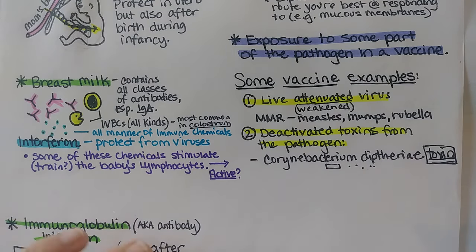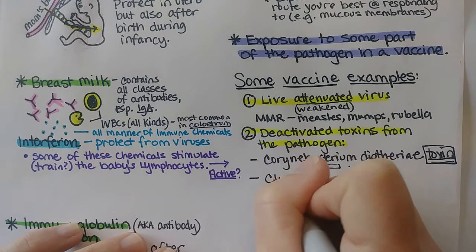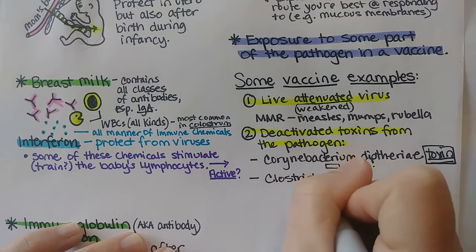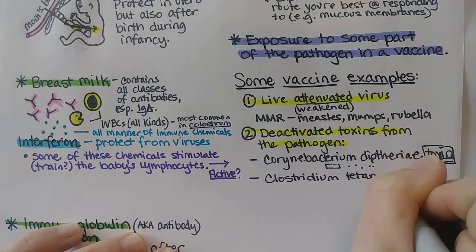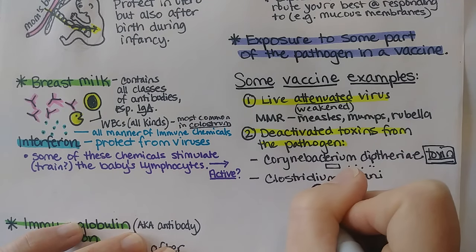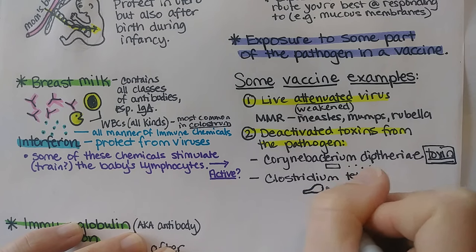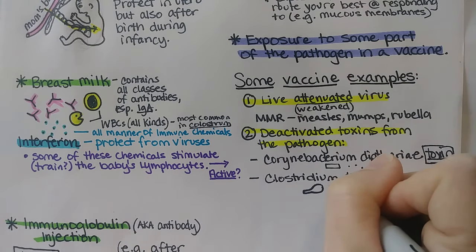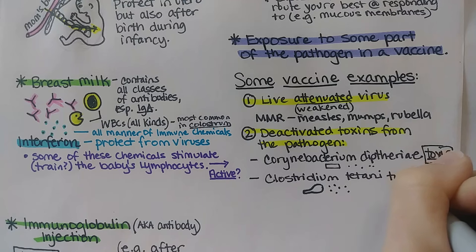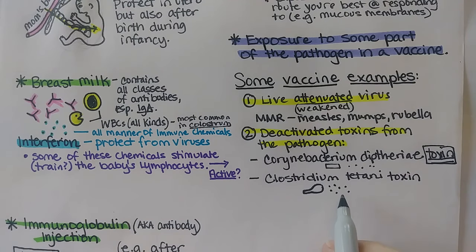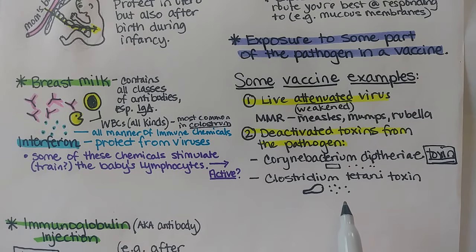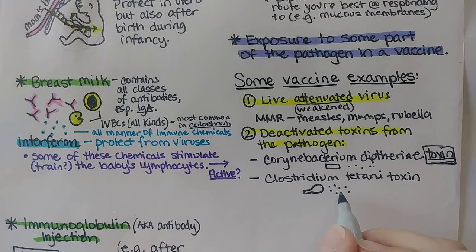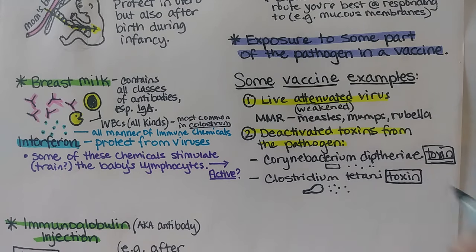Another toxin-based vaccine is for tetanus disease, caused by Clostridium tetani, an endospore-forming bacteria that looks a bit like a tennis racket. It makes a toxin, and a deactivated form of that toxin is injected into the person, who then makes antibodies to it. So that's another example of immunity based on the toxin rather than the bacterial cell itself.